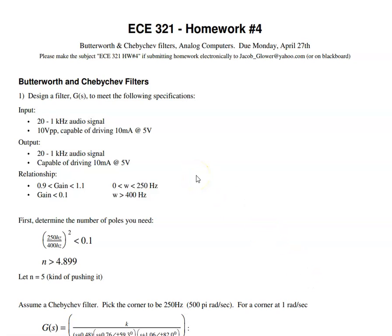The first problem is to design a filter to meet the following requirements. I want the gain to be at least 0.9 for frequencies less than 250 Hz, and no more than 0.1 for frequencies above 400 Hz. Essentially build a subwoofer crossover.